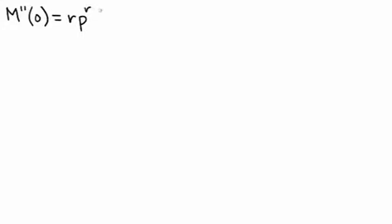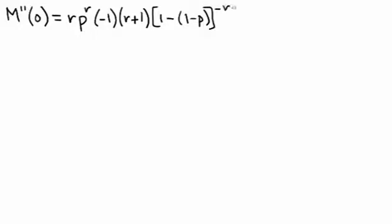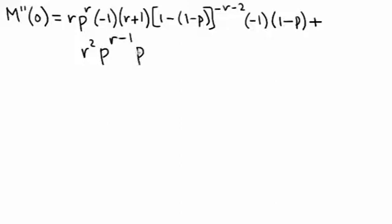So we have r times p to the r times, and I'm going to rewrite negative r minus 1 as negative 1 times r plus 1, times, and we have 1 minus (1 minus p) to the negative r minus 2 times, and I'm going to rewrite that as negative 1 times (1 minus p), plus then we have r squared times p to the r minus 1 times p times (1 minus (1 minus p)) to the negative r minus 1.